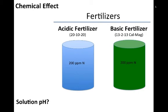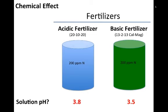Thinking about the chemical effect of fertilizers: if you mix fertilizers at 200 parts per million — an acidic fertilizer (the blue one) had a solution pH of about 3.8 in concentrate. Interestingly, a basic fertilizer — in this case 13-2-13 Cal-Mag — was actually more acidic in solution than a 20-10-20. However, a 20-10-20 has a potential acidity of about 400 pounds, whereas 13-2-13 has a potential basicity of about 400 pounds. It's counterintuitive that the basic fertilizer is more acidic in solution.